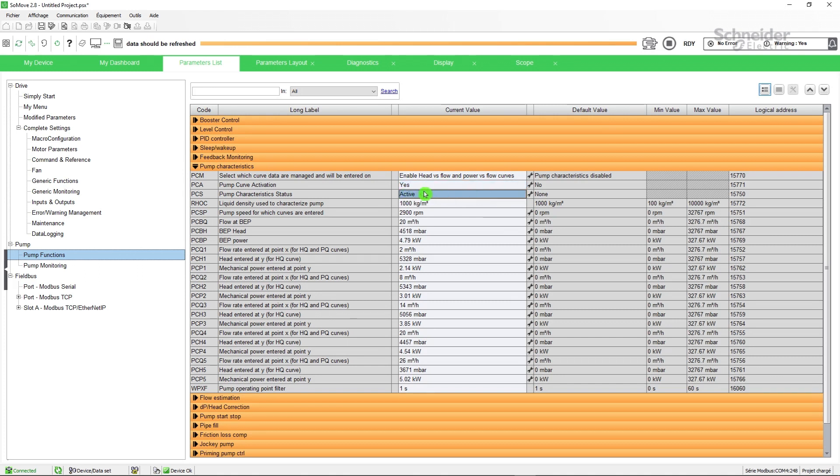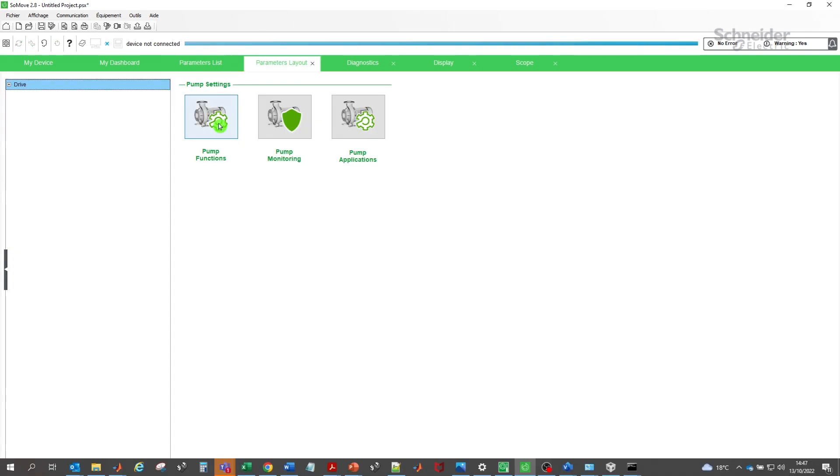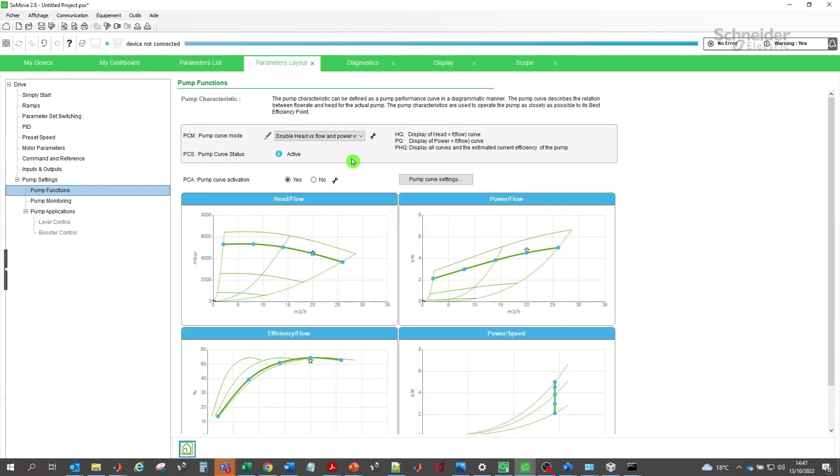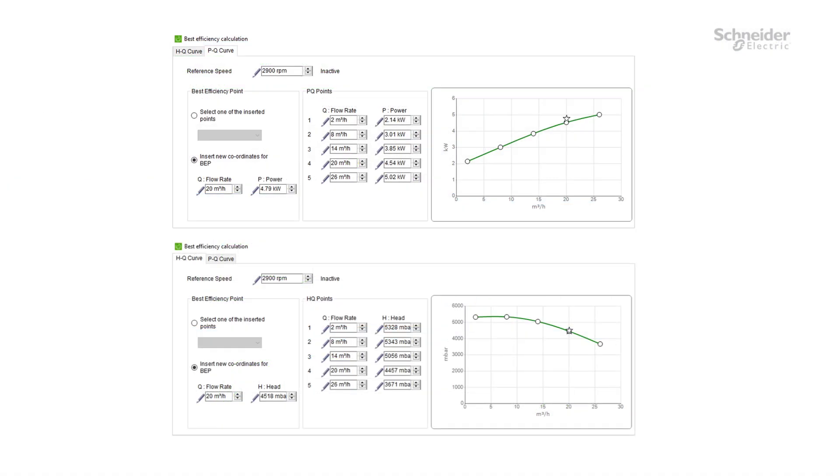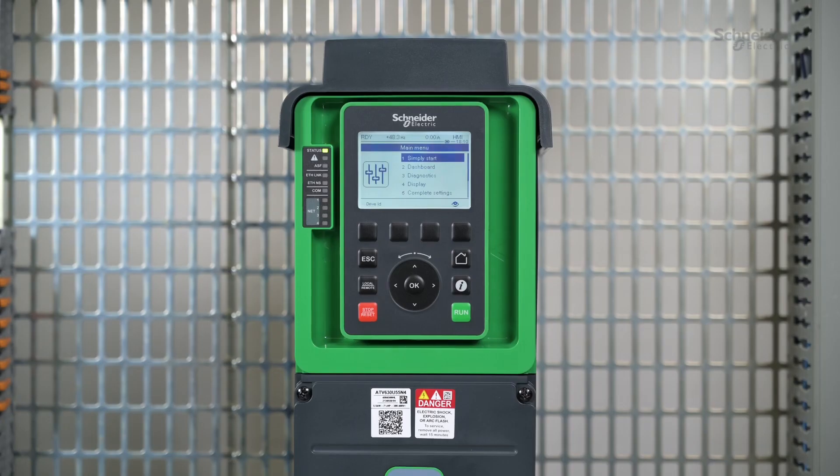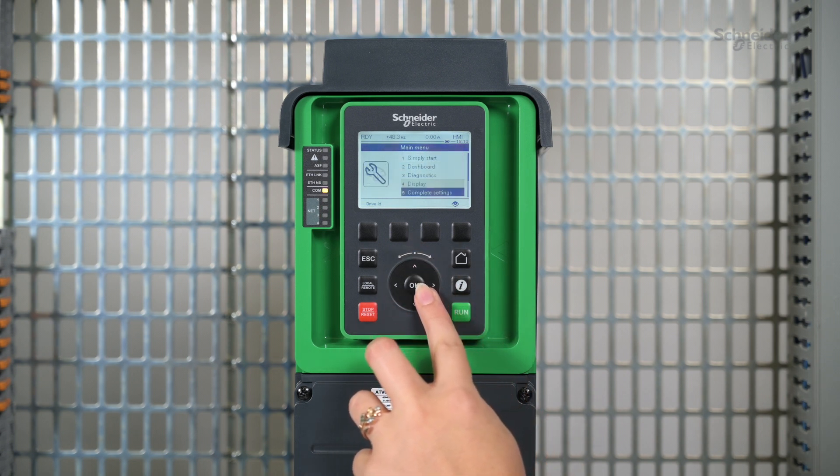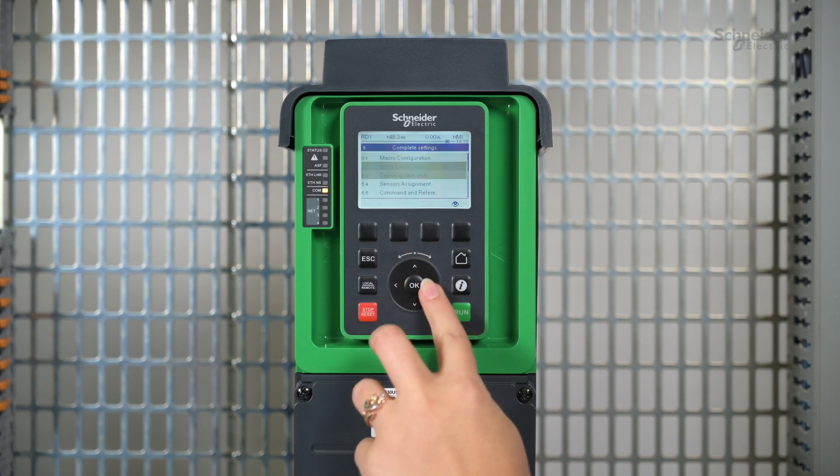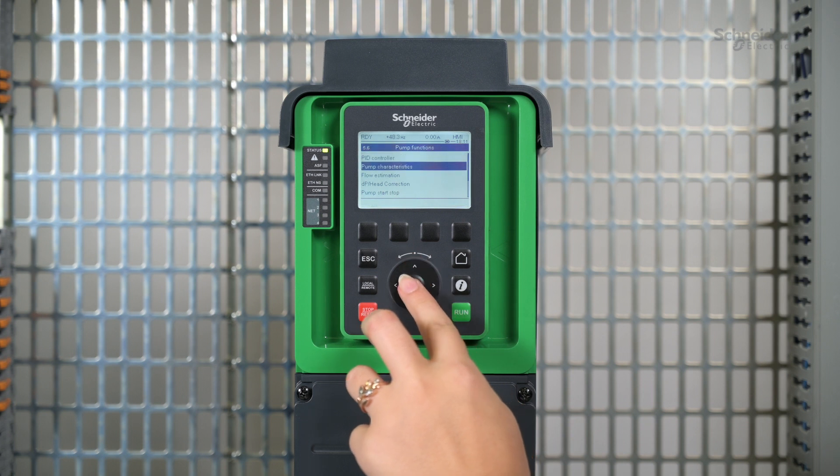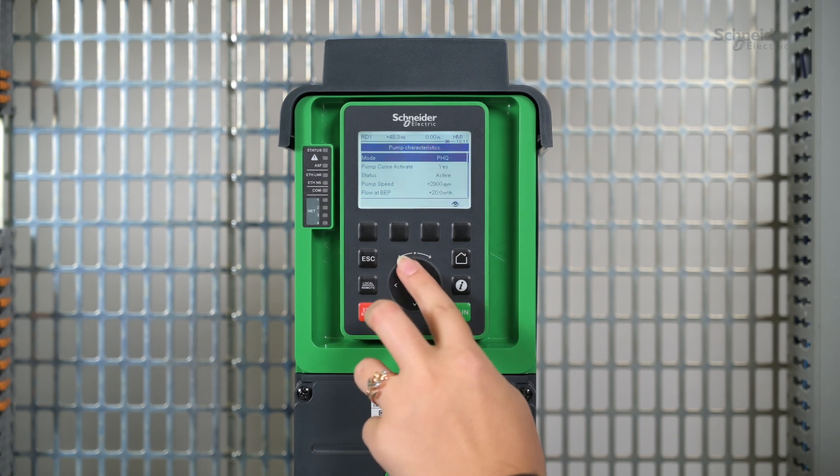You can also enter the value for each point in the parameters layout tab. Click on pump curve settings. Here we see the points we have set. Go to complete settings menu, then select pump functions. Click on pump characteristics to see the values that you have set.